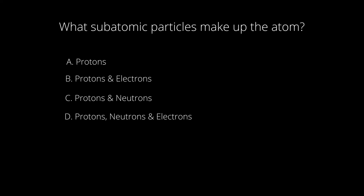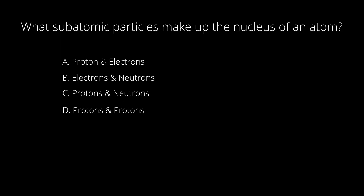Question number one: what subatomic particles make up an atom? Is it A, protons; B, protons and electrons; C, protons and neutrons; or D, protons, neutrons, and electrons? If you chose D, protons, neutrons, and electrons — you are correct. Question number two: what subatomic particles make up the nucleus of the atom? Is it A, protons and electrons; B, electrons and neutrons; or C, protons and neutrons? If you chose C, protons and neutrons — you are correct.